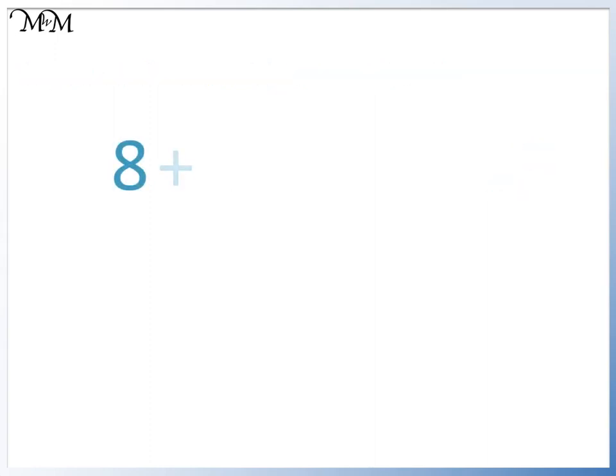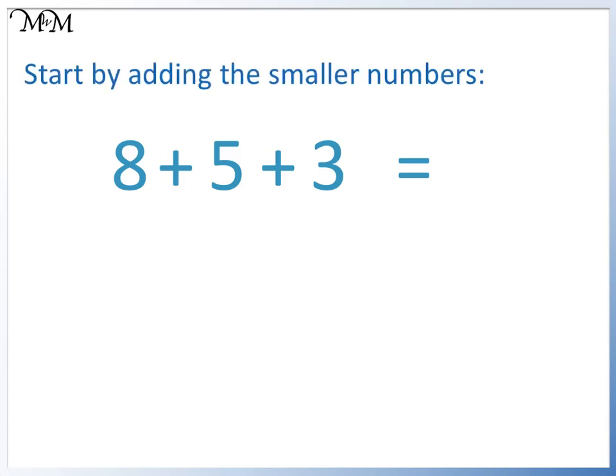Here is 8 plus 5 plus 3. We can't make 10 and we can't make 9. We can try the other strategy and start by adding the smaller numbers. 5 plus 3 equals 8.